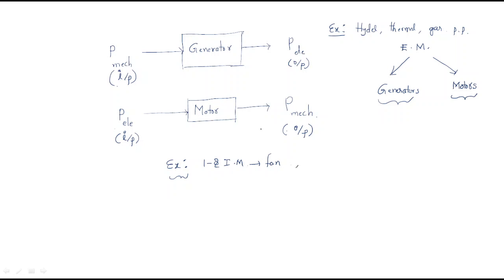The main difference between a generator and a motor is the direction of energy conversion. In both cases, electrical supply is involved — either as output (generator) or as input (motor). Wherever electrical supply is involved, the machine is called an electrical machine.